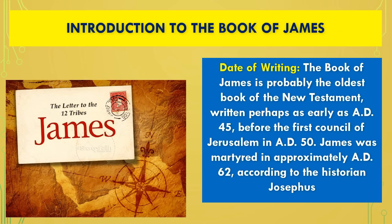The book of James is probably the oldest book of the New Testament, written perhaps as early as AD 45, before the first council of Jerusalem in AD 50. James was martyred approximately in AD 62 according to historian Josephus — he was cast down from the top of the temple, asked to deny Jesus, and refused. They tried to stone him and he still didn't die, so ultimately they clubbed him to death, as most true followers of Christ went to a martyr's death.